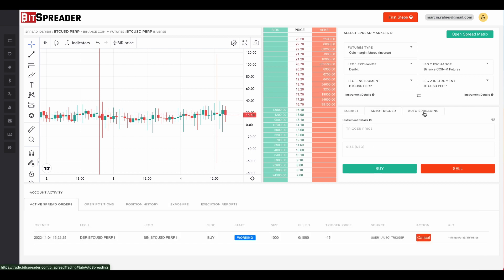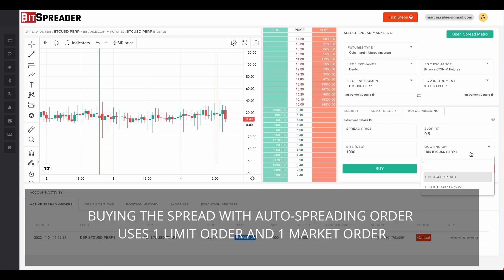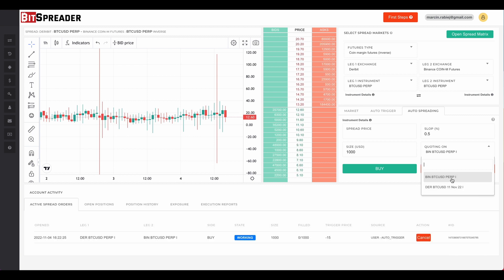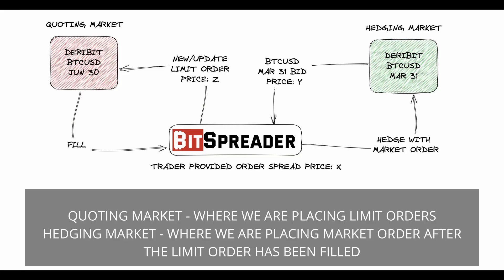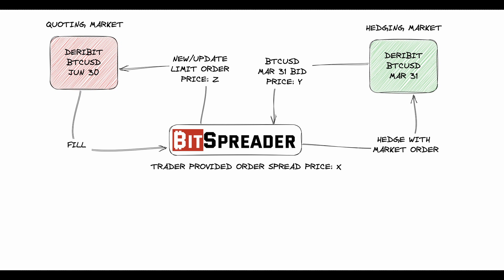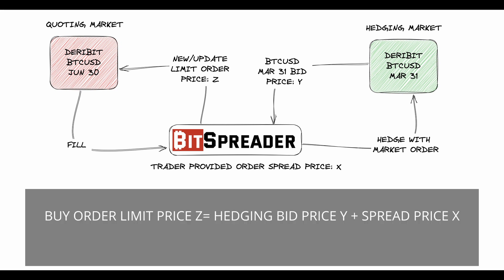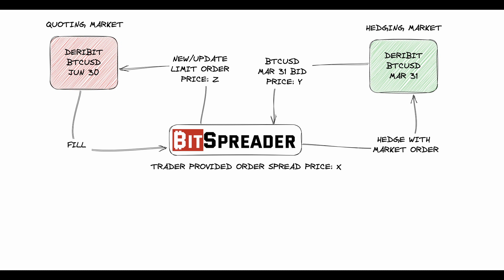As an alternative scenario, let's consider executing this arbitrage trade with the auto spreading order. BitSpreader executes auto spreading orders using one market order and one limit order. First, we choose on which market BitSpreader will place limit orders — the quoting market — and on which it will place market orders — the hedging market. BitSpreader puts a limit order on the quoting market with a price computed as the hedging market price plus the provided spread price. Every time the hedging price moves, BitSpreader updates the limit order. When the limit order is filled, BitSpreader instantly hedges by executing an opposite market order on the hedging market.